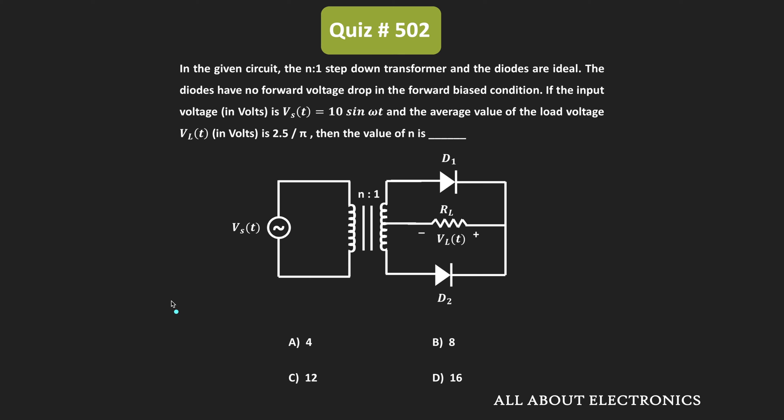Hey friends, welcome to the YouTube channel All About Electronics. So in this question, we have been given this circuit, and in this circuit we have been given that the step-down transformer and the diode in the circuit are the ideal diode.